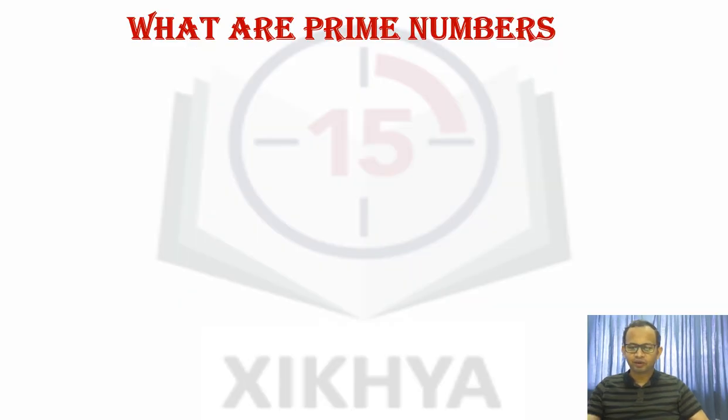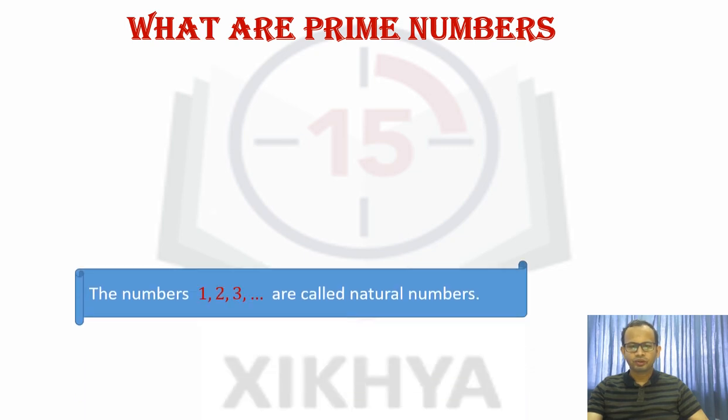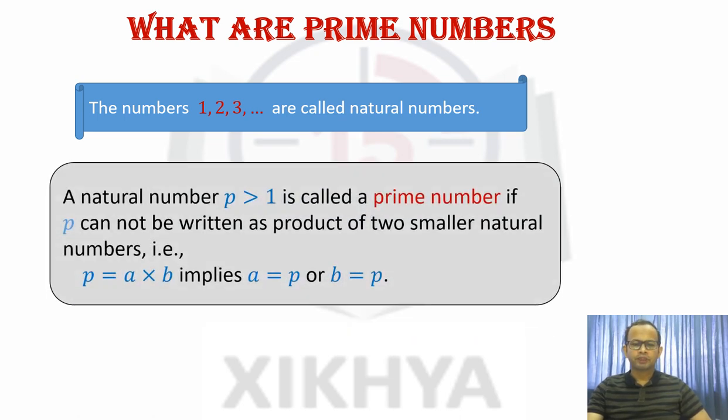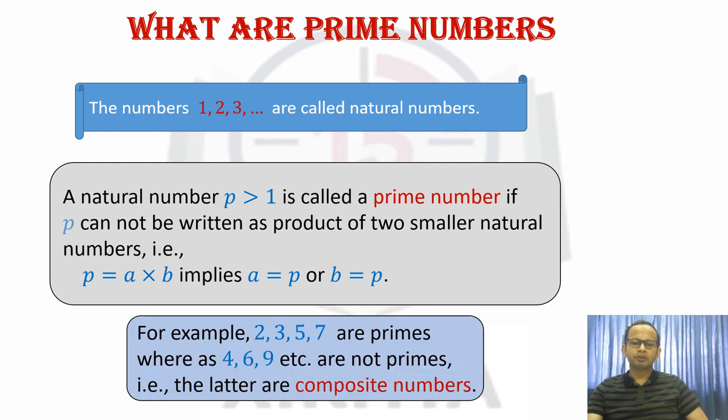So let us begin by recalling what prime numbers are. We know that these numbers 1, 2, 3, 4, etc. are called natural numbers. So what's a prime number? A natural number p bigger than 1 is called a prime number if p cannot be written as product of two smaller natural numbers. In other words, if p is a times b, then either a is p or b is p. And for example, 2, 3, 5, 7, they are primes, and 4, 6, 9, etc. they are not primes. In other words, they are all composite numbers.